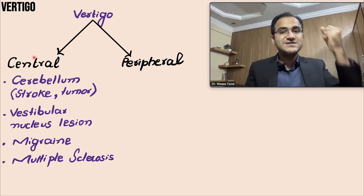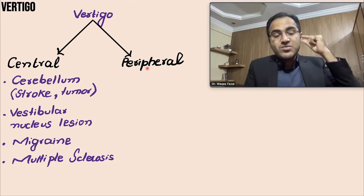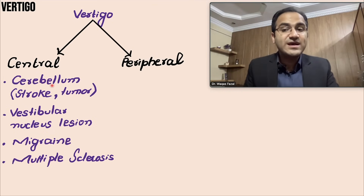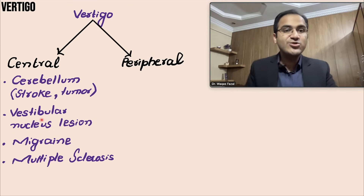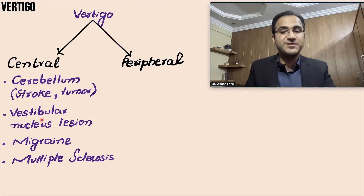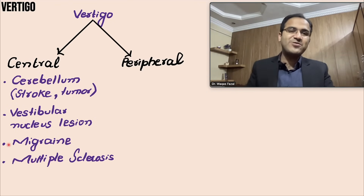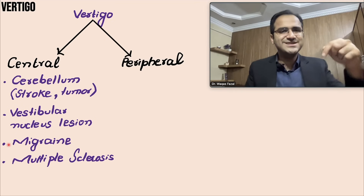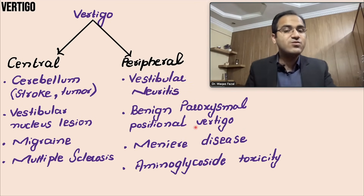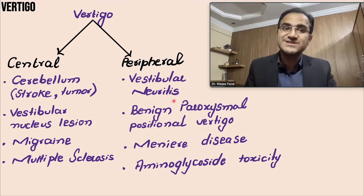In the sensation of vertigo, the patient feels that the surrounding is moving. Vertigo can have central causes — where the brain perceives wrong signals — or peripheral causes — where the inner ear sends wrong signals. Central causes include cerebellar strokes or tumors, vestibular nucleus disease, migraine, and multiple sclerosis. Peripheral causes include vestibular neuritis, benign paroxysmal positional vertigo, Meniere's disease, and aminoglycoside toxicity.